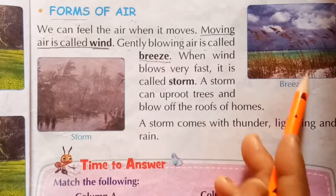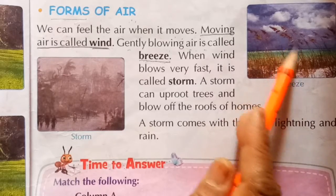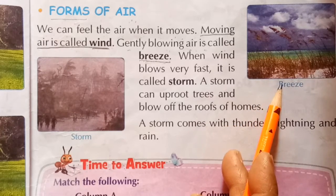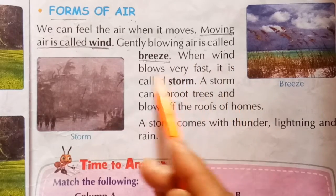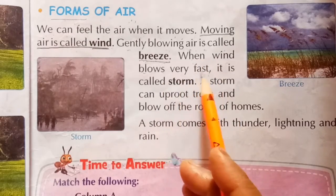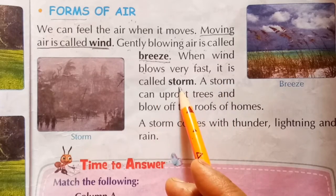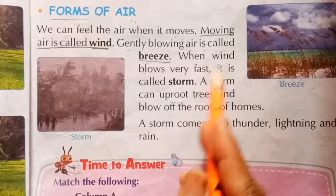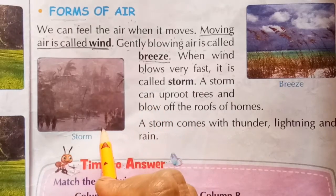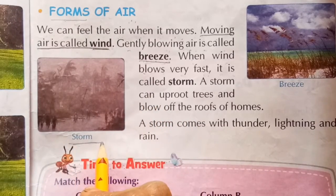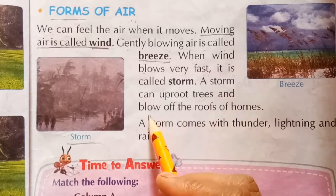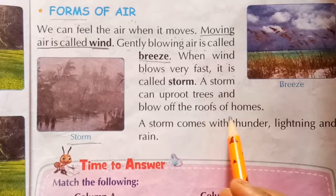When wind blows very fast, it is called a storm. A storm can uproot trees and blow off the roof of homes.